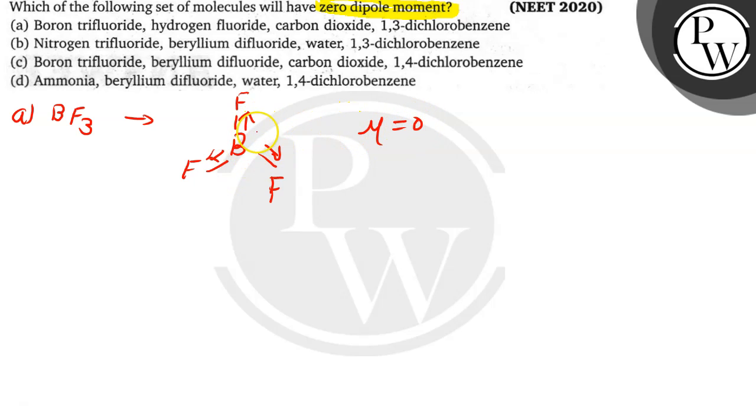Next we have hydrogen fluoride, that is HF. Its structure will be H bonded to F, so here net dipole moment will be this side, means μ is not equal to zero. So we have to select in which all the molecules will have zero dipole moment. We got here that hydrogen fluoride is not having zero dipole moment, means this cannot be our answer.